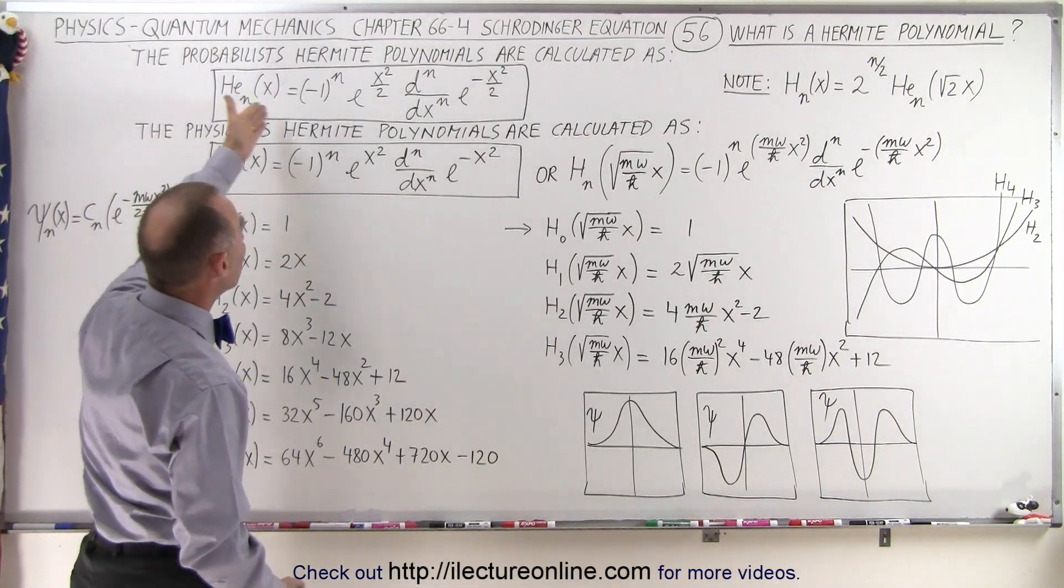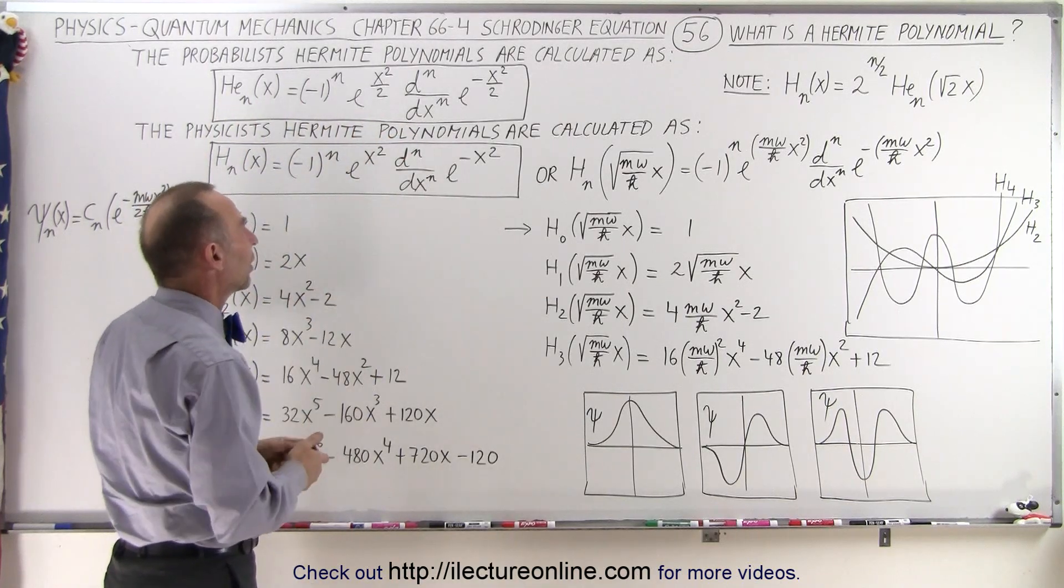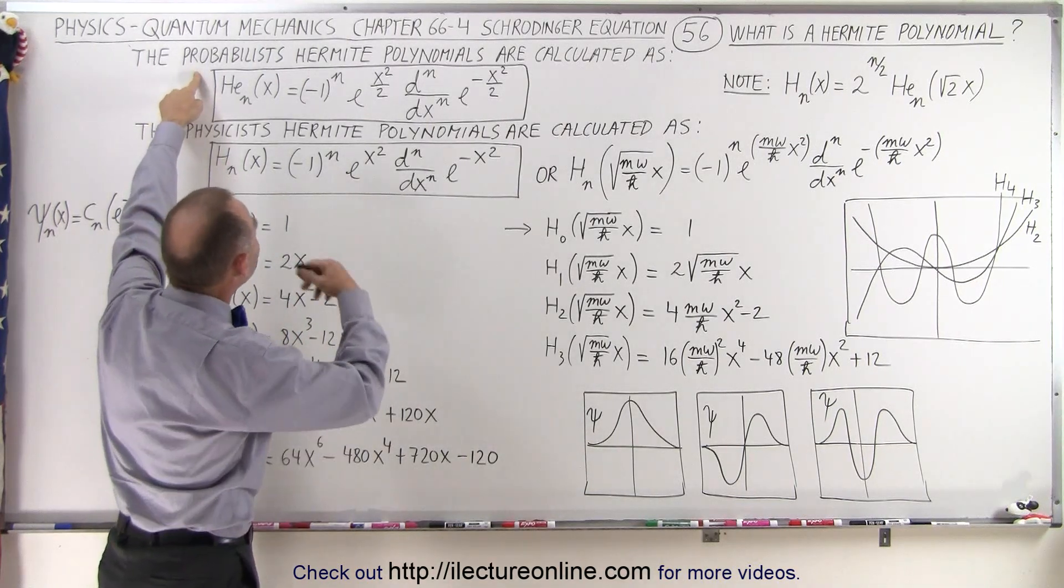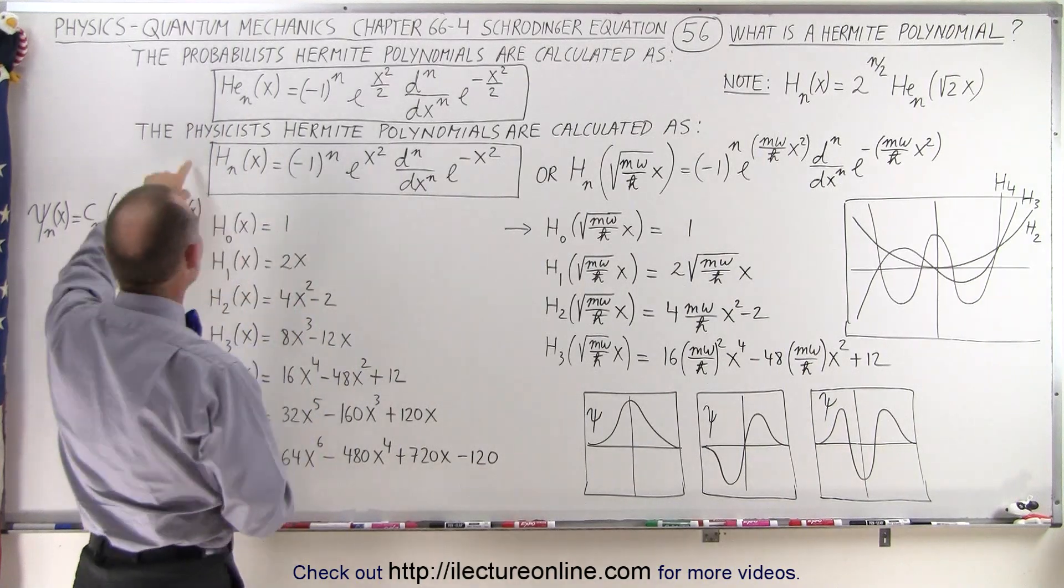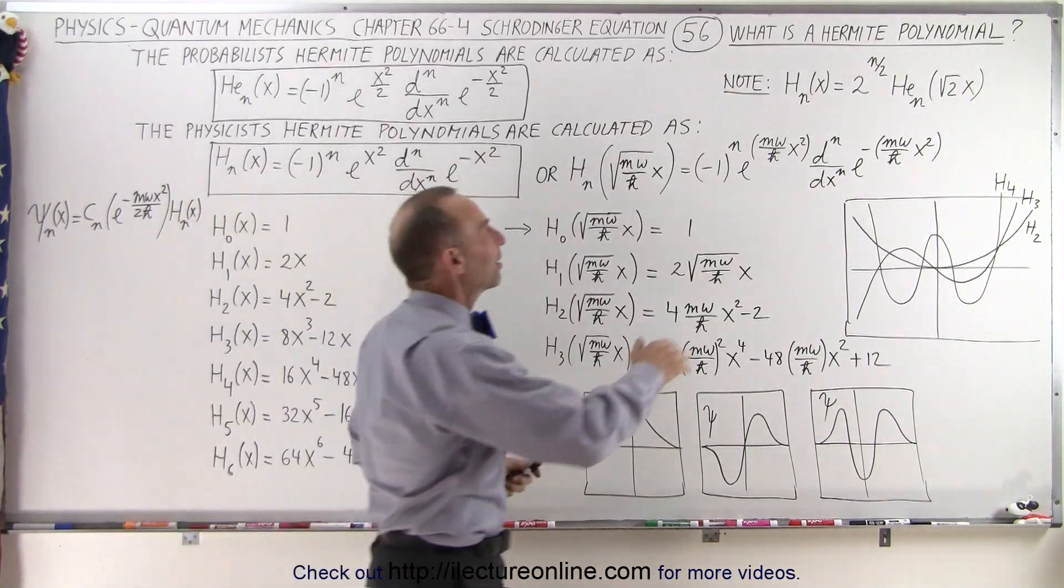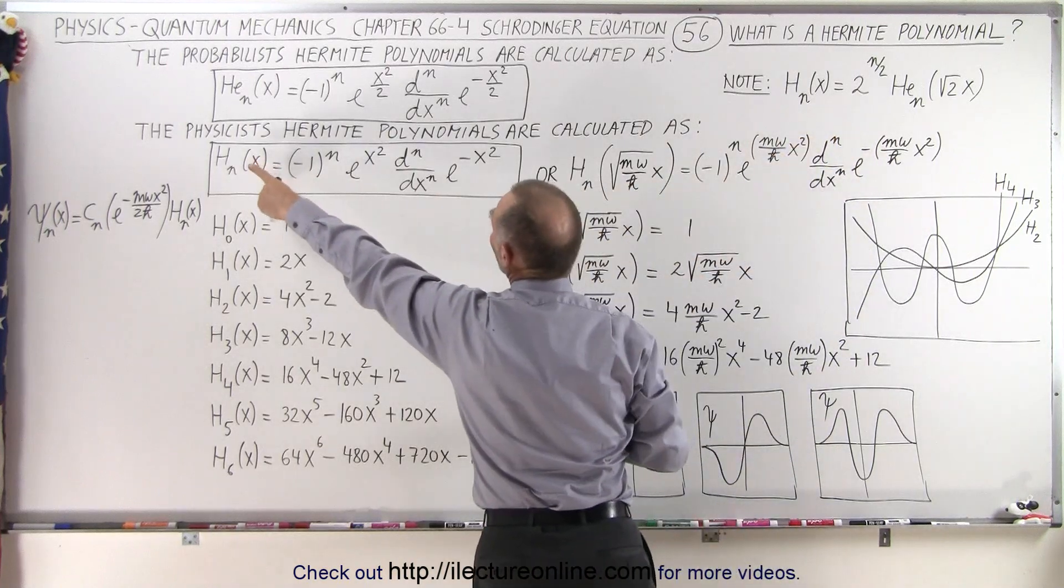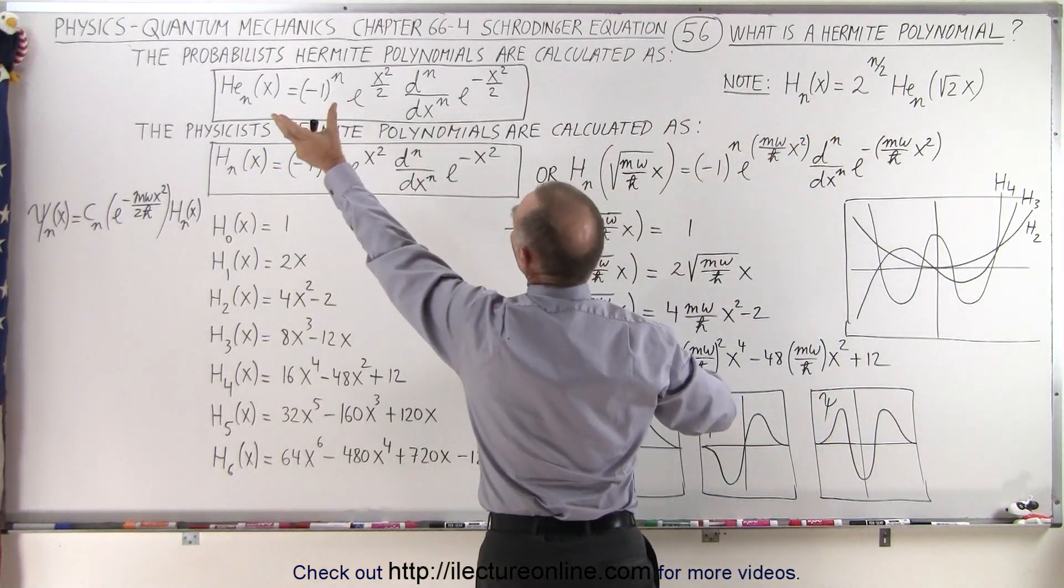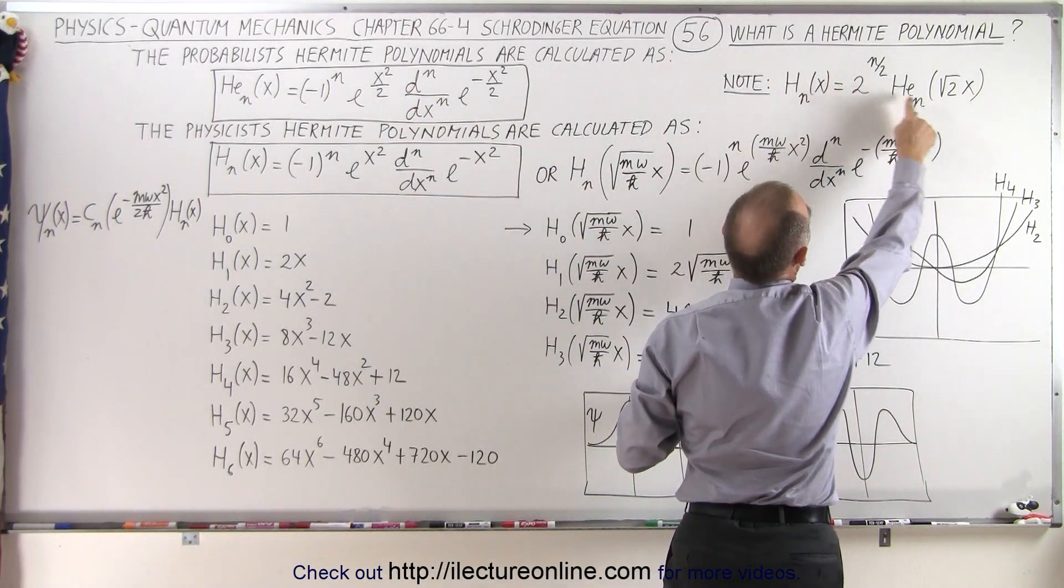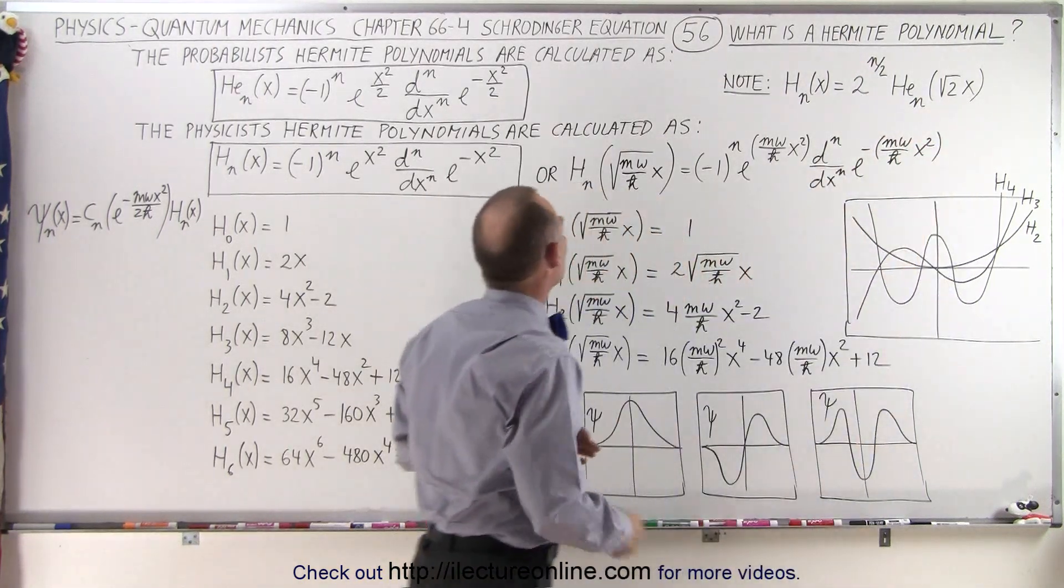Here are the equations that define how to derive those equations. We have two types: the probabilitists, that's very difficult to pronounce, and the physicist Hermite polynomials. They're basically the same with a slight difference that one is a factor of the other. Notice we can get the physicist Hermite polynomials by taking the probabilitist Hermite polynomials, multiplying it times two to the n over two, and then taking the function of the square root of two of x instead of just the function of x.